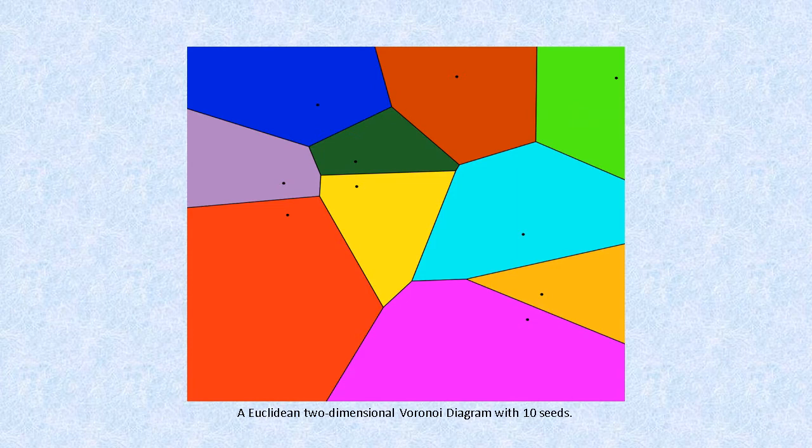Voronoi diagrams are useful in a variety of fields, from finite difference methods and image compression in computer science and engineering to representations of cell biology in the natural sciences.